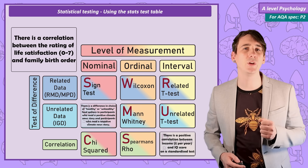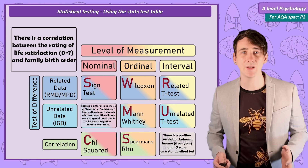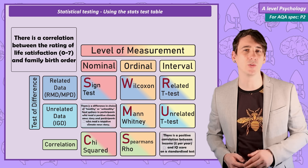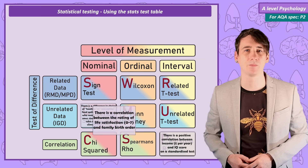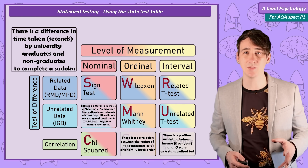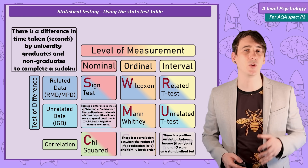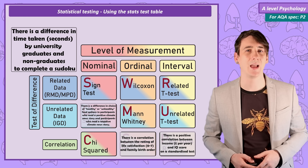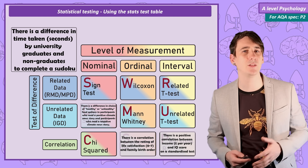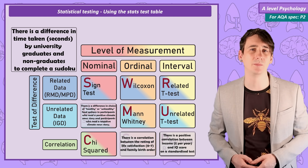Example 3: the researcher would use Spearman's rho. This is again a correlation, and the data collected is at the ordinal level. Example 4: this is an unrelated t-test. A test of difference with unrelated data, as independent groups are used — and as it has 'unrelated' in the name, this stats test is pretty easy to remember. The data collected is at the interval level.